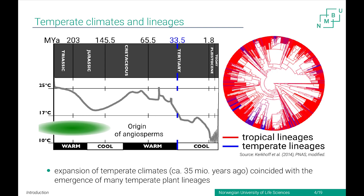To study that, we need to know a little bit more about temperate climates. We heard yesterday that the Earth's climate was pretty warm before, and temperate climates are actually not that old. You can see that on this graph showing the global mean annual temperature in the past 200 million years. At the time when the angiosperms originated, global climate was fairly warm and temperate climates were very limited. They started to expand starting around the Eocene-Oligocene boundary, when temperatures dropped, and this coincided with an emergence of temperate lineages in many plant groups.